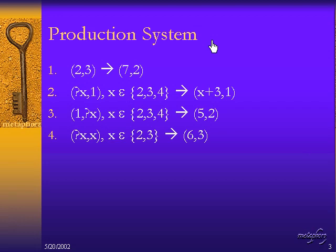Our production system, instead of 9 individual rules, will have 4 rules, and each of these rules will specify a transition. Now, the first rule is an individual transition. If the state is in 2 comma 3 at some particular time, then at the next time, it will be in 7 comma 2.